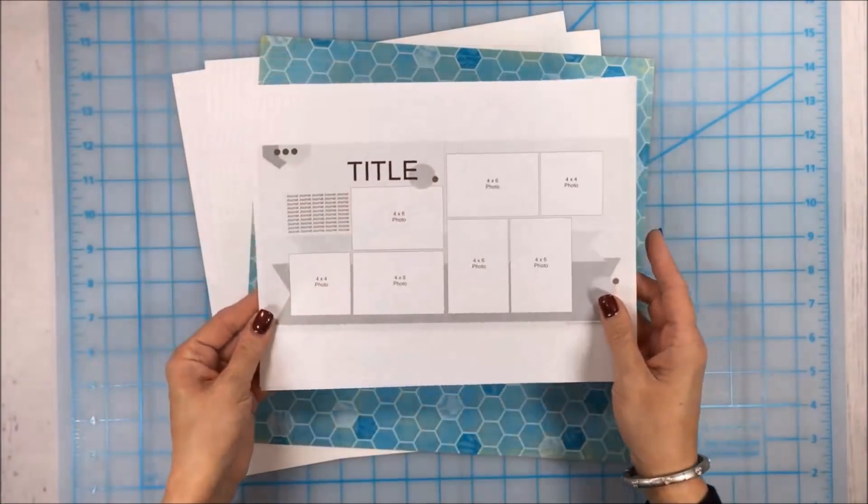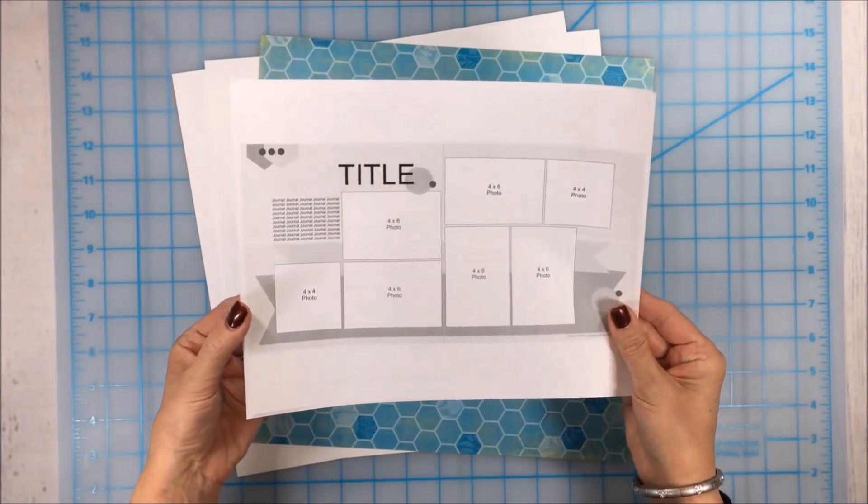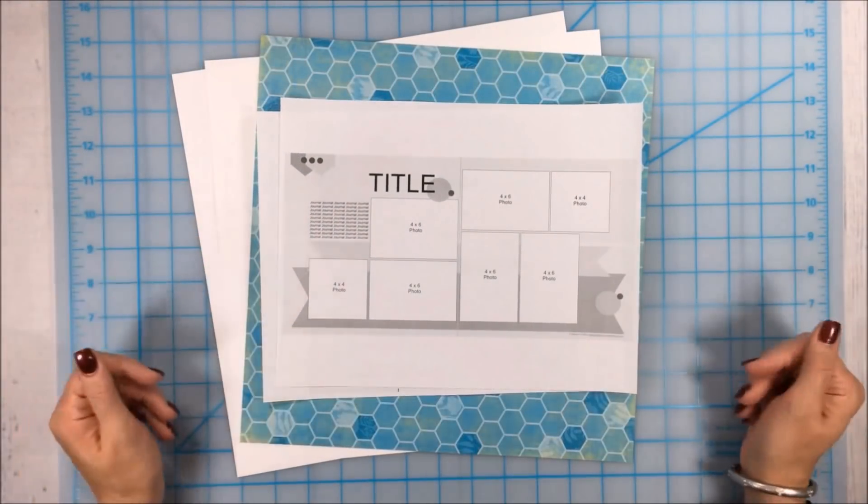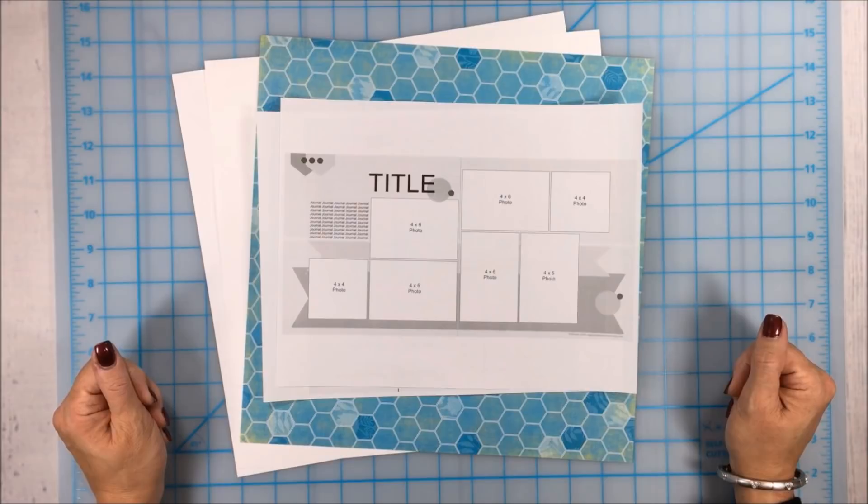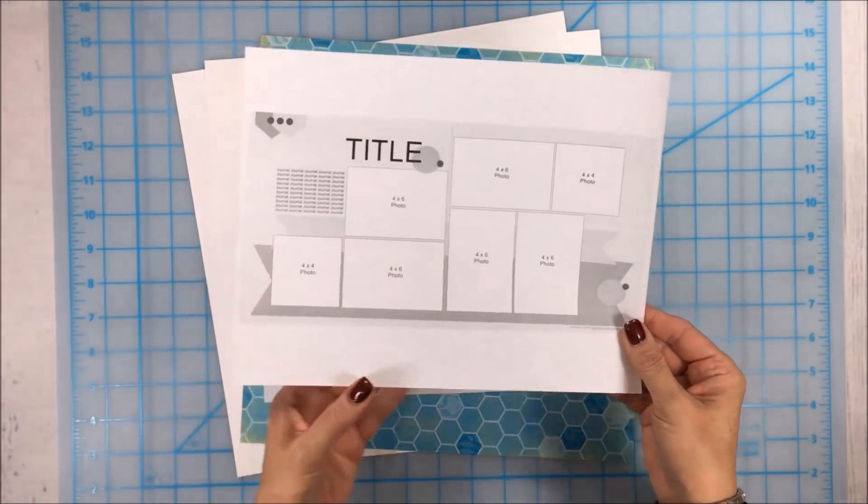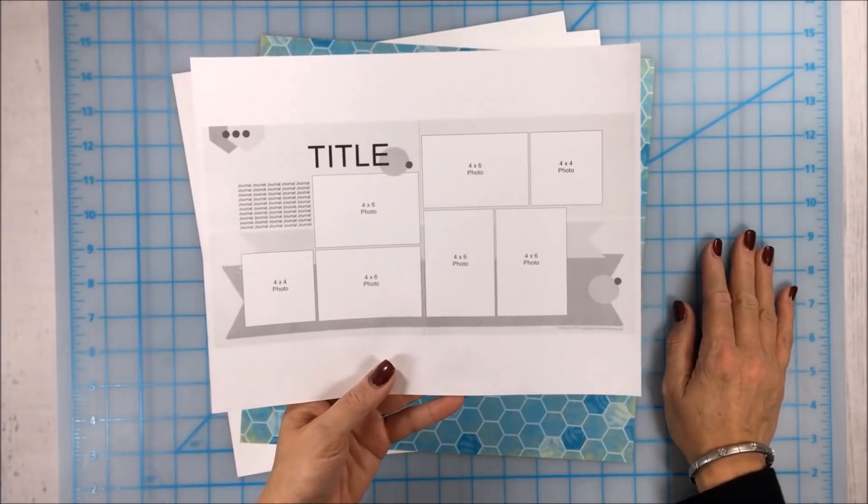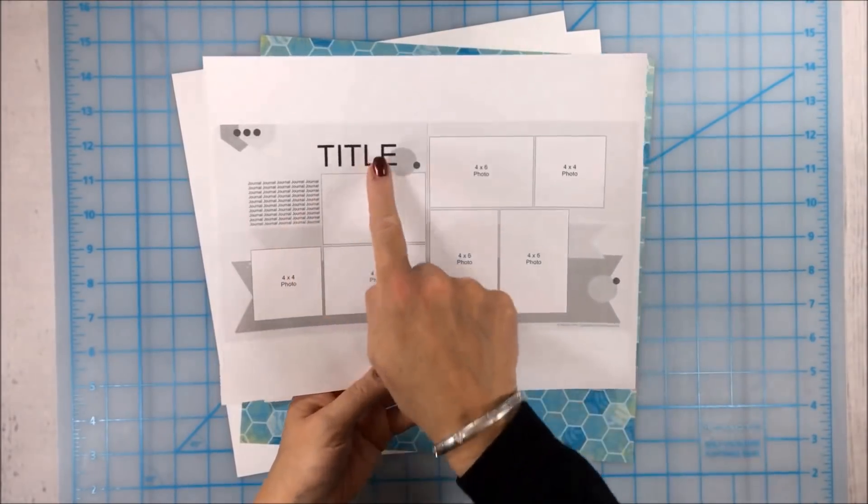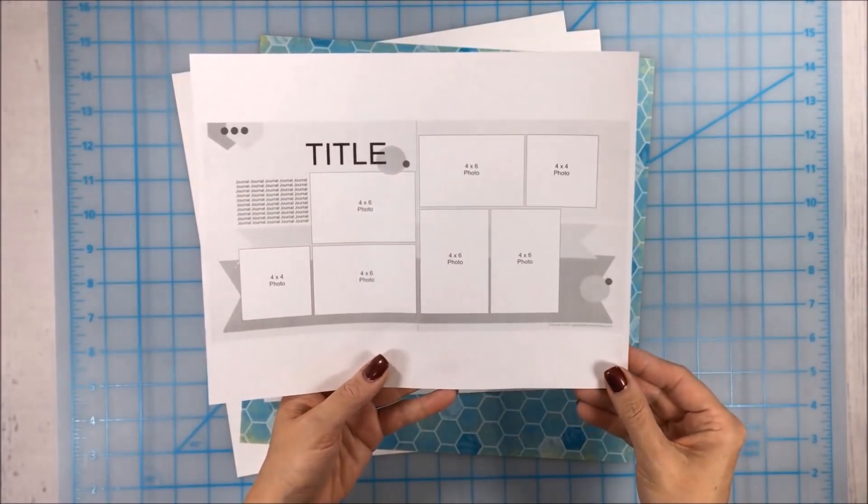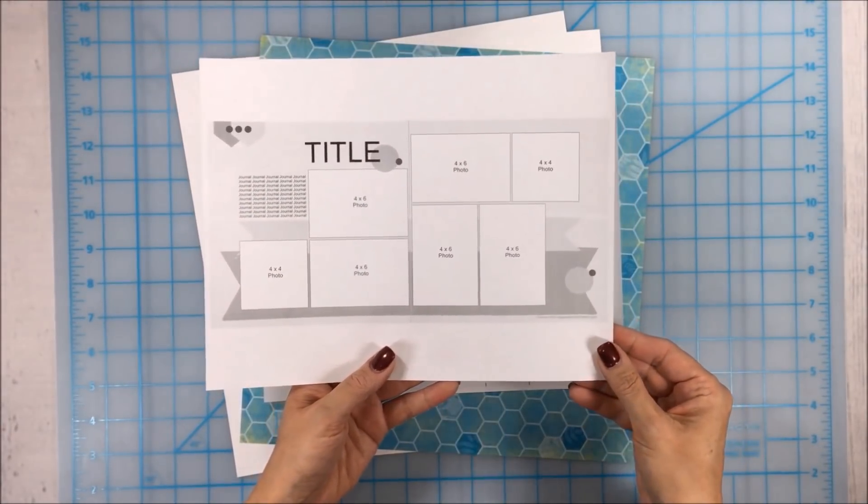I give you the sketch each month as well as a cutting guide that shows you how to make those three cuts, and then the whole thing comes together very quickly into a two-page layout. So let's look at the sketch for this month. We've got seven photos as well as journaling, titles, and some embellishment clusters. Please make these your own.